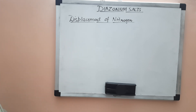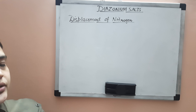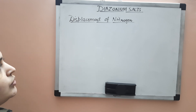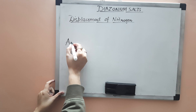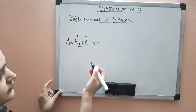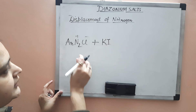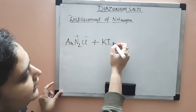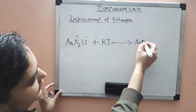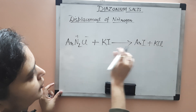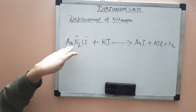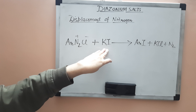First, we will study the displacement of nitrogen by iodide — how we will introduce the iodide ion into the diazonium salt or aromatic ring. We treat the diazonium salt ArN2+Cl- with potassium iodide. What you get is aryl iodide, plus KCl (potassium chloride) and nitrogen gas. This is how you introduce iodide into the aryl group.